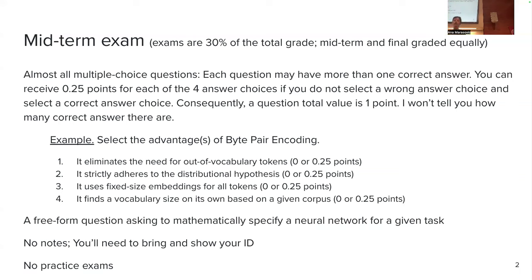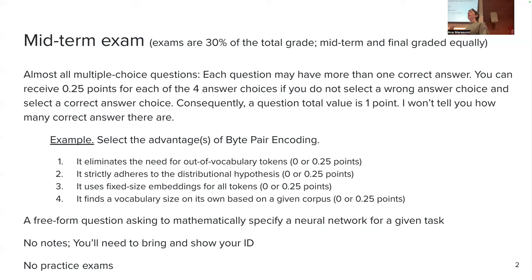Yes — it does eliminate the need for out-of-vocabulary tokens. Remember, BPE splits everything into sub-tokens, so every word can be decomposed into subword units. If we don't have subword units that compose a word, we do character fallback, where we compose the word from individual characters. So we no longer need to introduce a special unknown token and represent unknown words with it at test time. That is one advantage of BPE — option one is correct.